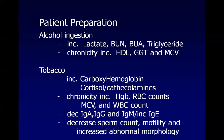Tobacco smoking can increase carboxyhemoglobin, cortisol, and catecholamines. The chronic effects of tobacco smoking include increased hemoglobin, RBC counts, mean corpuscular volume, and WBC count. Tobacco smoking also decreases immune response — decreasing IgA, IgG, and IgM while increasing IgE. One study noted it causes decreased sperm count and motility and increased abnormal morphology.